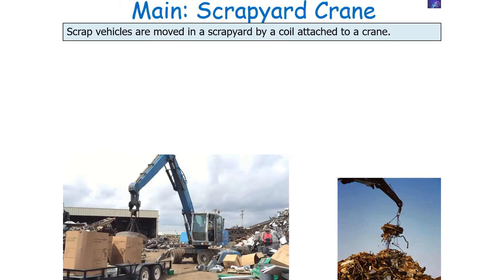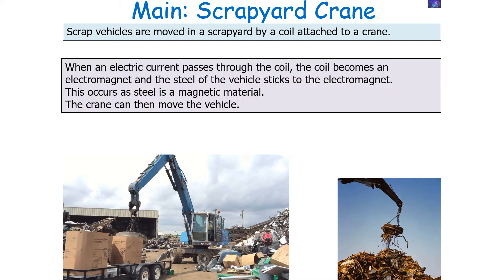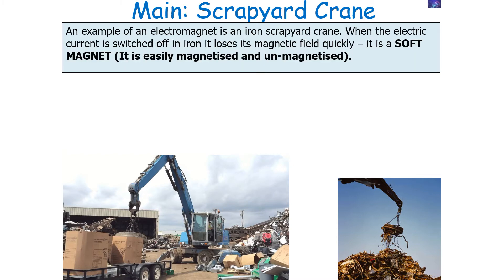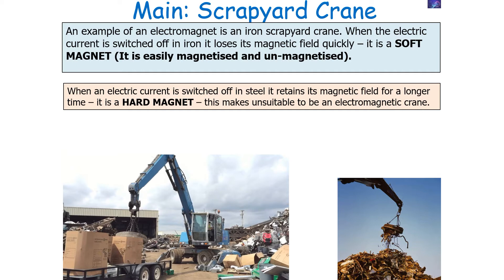How does a scrapyard crane work? Scrap vehicles are moved in the scrapyard by a coil attached to a crane. When an electrical current passes through the coil, the coil becomes an electromagnet and the steel of the vehicle sticks to it, because steel is a magnetic material. When the electrical current is removed, the coil loses its magnetism and the steel vehicle drops off. We use iron for the coil because it is a soft magnet — easily magnetized and easily unmagnetized. If we used steel, it would retain its magnetic field after the current is switched off, making it unsuitable for an electromagnetic crane.